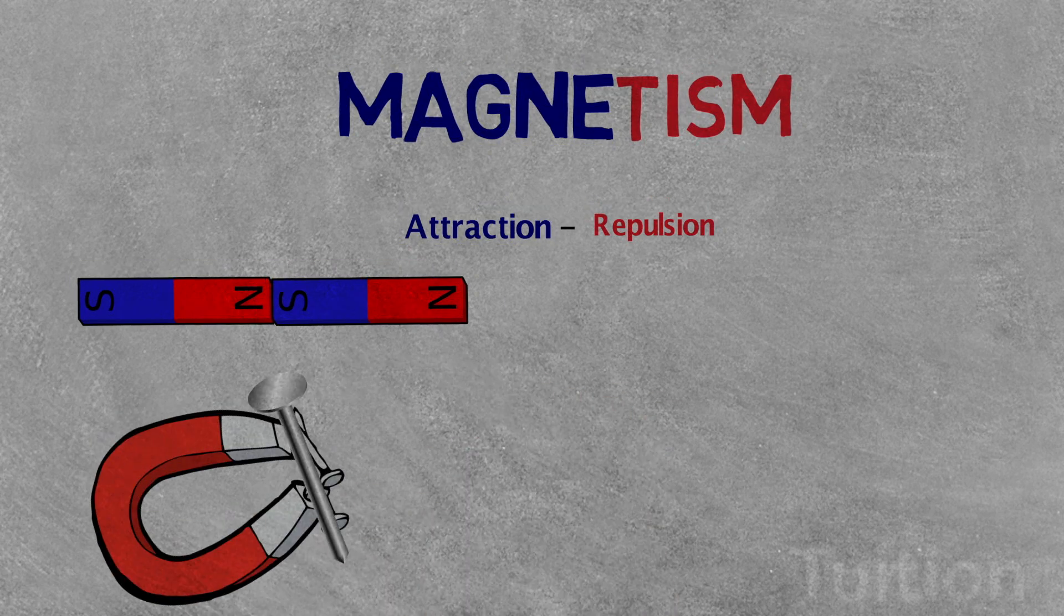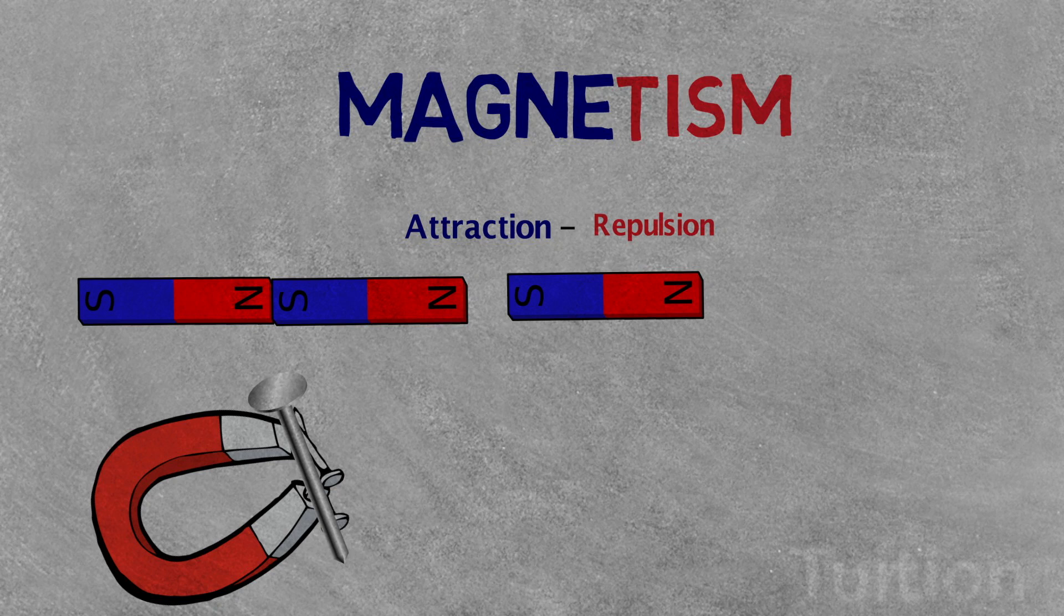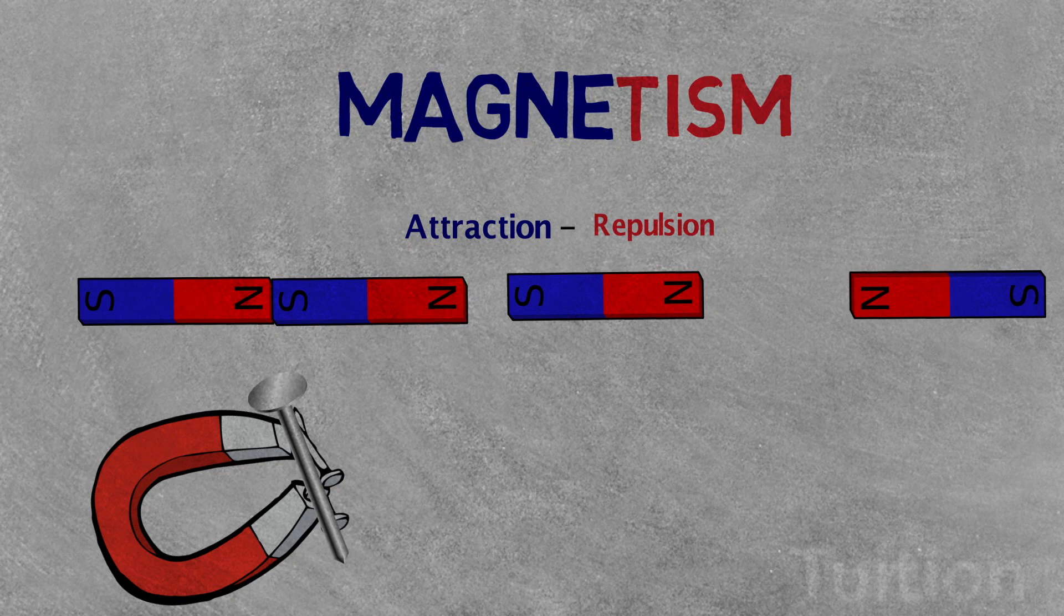Repulsion. When two magnetic objects have like poles facing each other, the magnetic force pushes them apart.